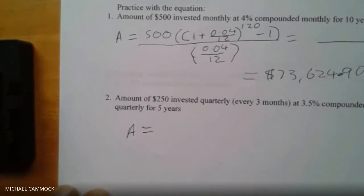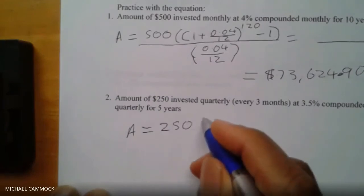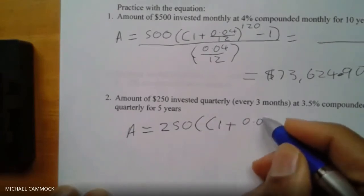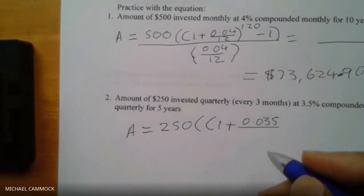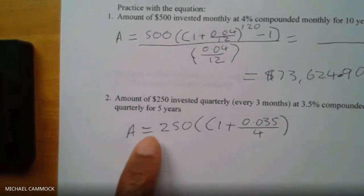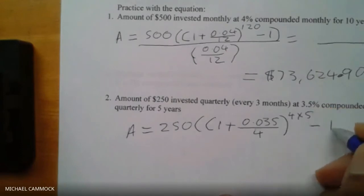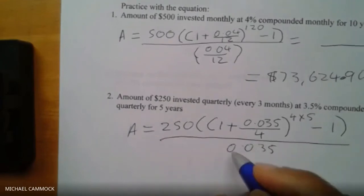Same formula again. A equals 250, two brackets, one plus 0.035 — quarterly means four times a year so divide by 4 — raised to the power of 4 times 5, which is 20, then minus one. All over 0.035 divided by 4 in a bracket. We'll work the top part first.